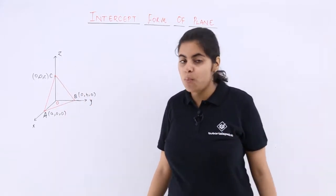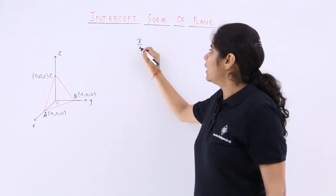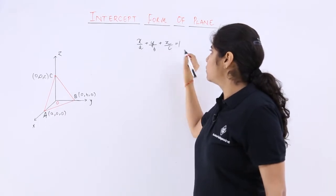The intercept form of a plane is x/A + y/B + z/C = 1.